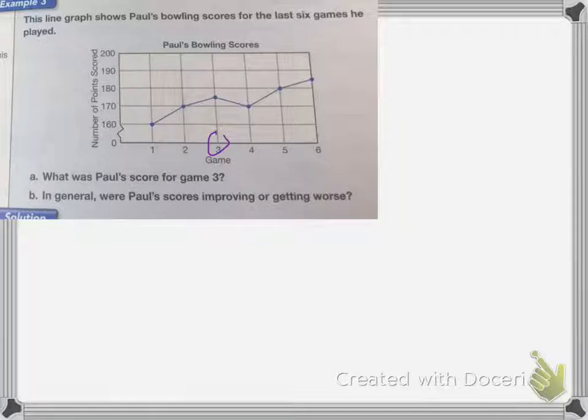I'm going to look up at the dot, and he scored somewhere between 170 and 180 games. And it looks like it's right in the middle, so he scored about 175 points for game three.